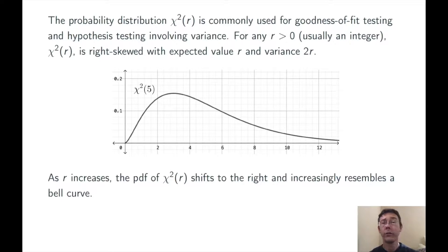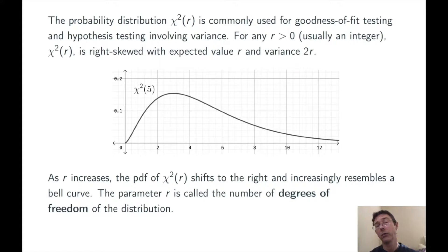As R increases, the PDF, the probability density function of chi-squared of R, shifts to the right and increasingly resembles a bell curve by the central limit theorem. The parameter R is called the number of degrees of freedom of that chi-squared distribution.